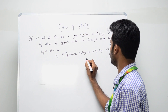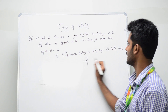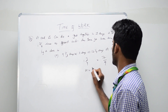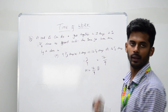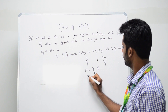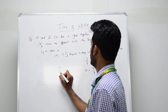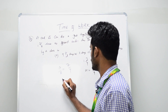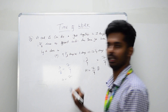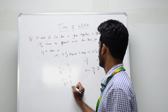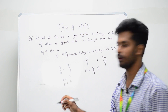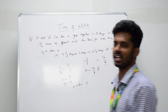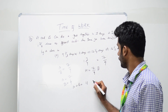A is 1 and 3/4 times as efficient as B. Writing that as an improper fraction: 1 and 3/4 equals 7/4. So A equals (7/4) times B, which means A divided by B equals 7 divided by 4. This tells us A's unit portion is 7 and B's unit portion is 4. Together, A plus B equals 7 plus 4, which is 11 units per day.